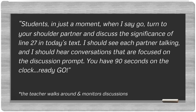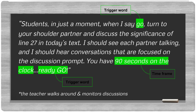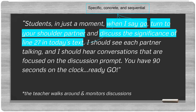We're going to put all of those characteristics together in what we feel is an example of an effective direction: 'Students, in just a moment, when I say go, turn to your shoulder partner and discuss the significance of line 27 in today's text. I should see each partner talking, and I should hear conversations that are focused on the discussion prompt. You have 90 seconds on the clock. Ready, go.' Did you notice how we included the trigger word 'go'? Trigger words help students process the entire directions and keep them from starting early and missing a piece of information. We also established a time frame of 90 seconds to complete the task. You'll need to have both a trigger word and a time frame in a set of instructions that you provide during your 10-minute mini-lesson.